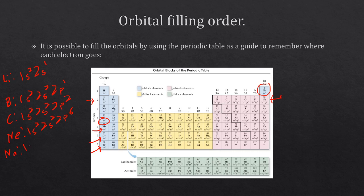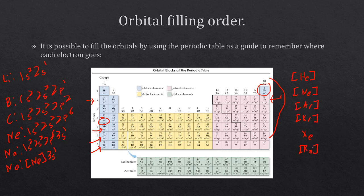When you get to sodium this is starting to get pretty long: 1s2 2s2 2p6 3s1. To make this easier, rather than writing everything out, you can use noble gas notation. For sodium we write that it has the electron configuration of neon, then 3s1. You can use helium to represent 1s2, or neon, argon, krypton, xenon, or radon. These are noble gases — really stable elements — and we're just worried about the electrons that occur after that stable configuration.